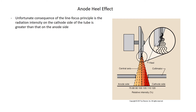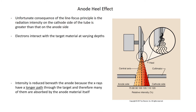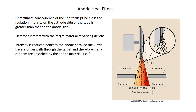The anode heel effect means that one side of your tube is going to have more intensity than the other. The radiation intensity on the cathode side of the tube is greater than on the anode side. When electrons strike the face of the anode, they interact at varying depths within the metal. The intensity is reduced beneath the anode because the x-rays have a longer path through the target and many are absorbed by the anode material. The smaller the angle, the larger the heel effect — more absorption on the anode side, less on the cathode side, giving a more intense beam on the cathode side.